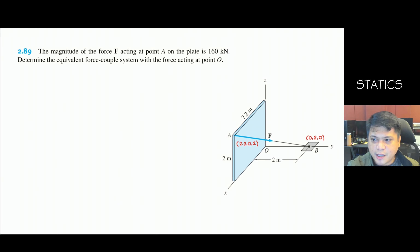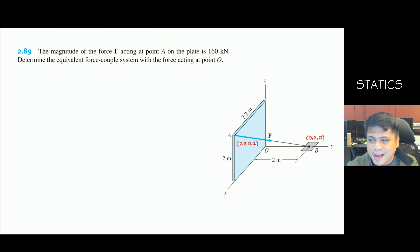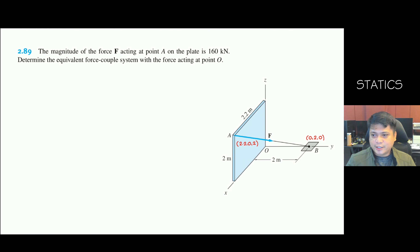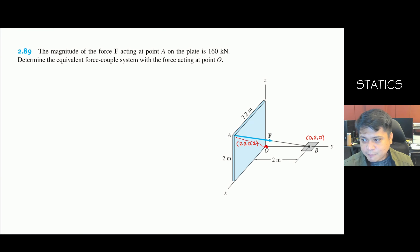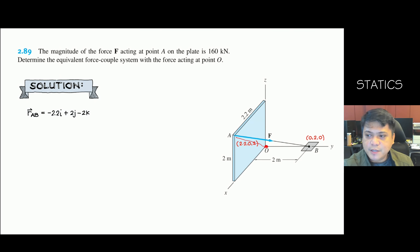Problem 2.89: The magnitude of force F acting at point A on the plate is 160 kilonewton. Determine the equivalent force-couple system with the force acting at point O. This time we are working in 3D space. We take the resultant and transfer it to point O. Because of the moment from point O to point A, there will also be a couple. We first find the position vector R_AB with coordinates: A at (2.2, 0, 2) and B at (0, 2, 0).